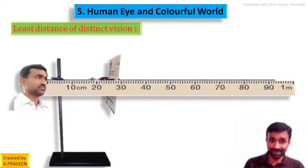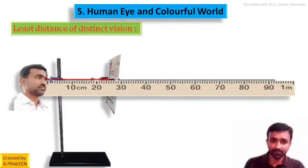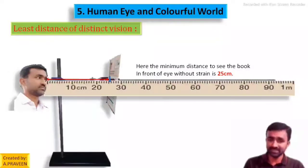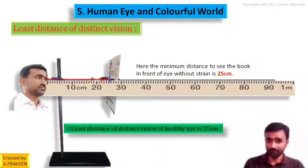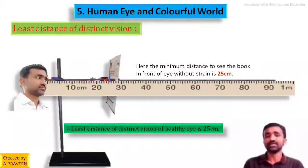The distance between the book and the observer's eye — indicated here with the red colored line — take the measurement. The measurement given here shows the distance is 25 centimeters. So the minimum distance to see the book in front of the eye without strain is 25 centimeters. This 25 centimeter distance is known as the least distance of distinct vision for a healthy eye.